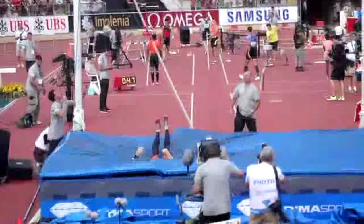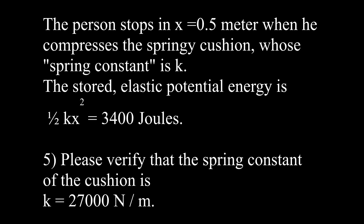The person stops in one half meter when he compresses the springy cushion, whose spring constant is k. The stored elastic potential energy is one half kx squared equals 3400 joules. Please verify that the spring constant of the cushion is k equals 27,000 newtons per meter.